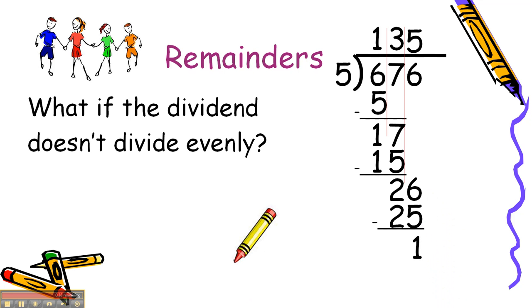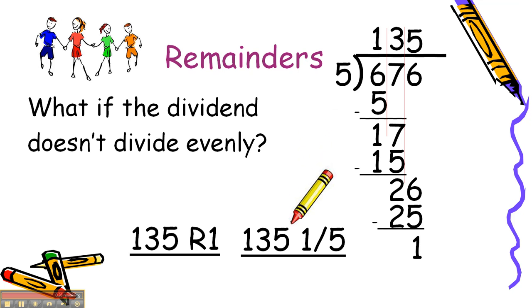We would have had to write it like this, 135 with a remainder 1. Or we can do it like this. Take the 1 that's a remainder, put it over the 5 which is the divisor and we'd have 135 and 1/5.